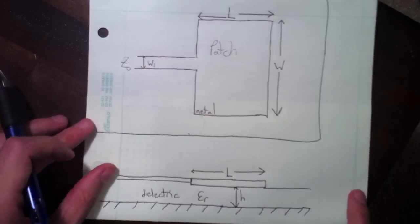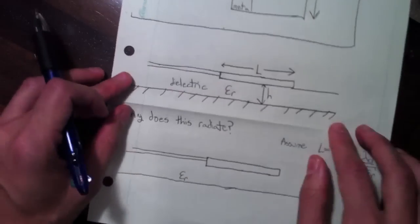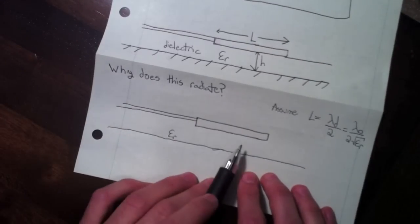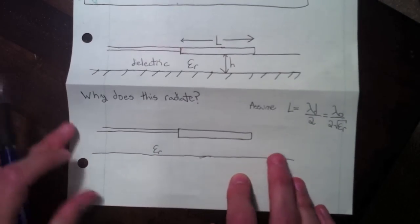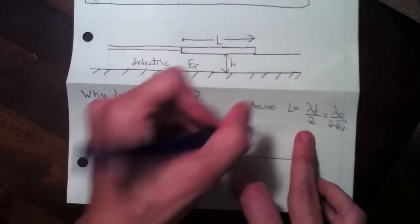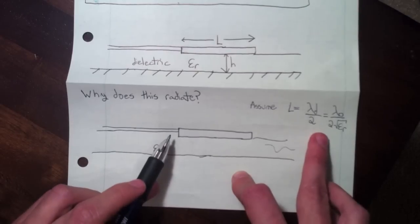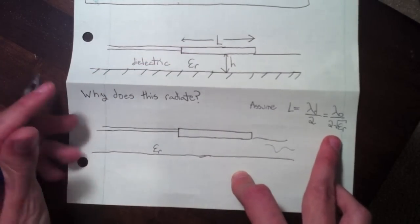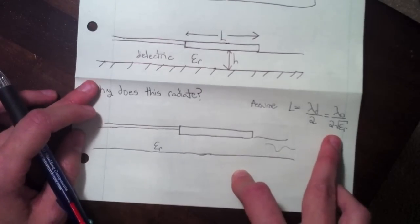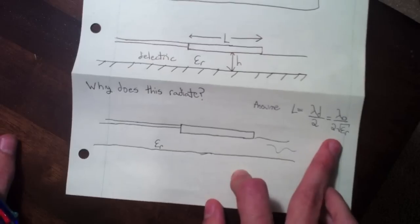So here is a patch antenna and why does it radiate? Looking at the side view, let's assume that the length is given by half a wavelength in this dielectric medium. That's the same as the wavelength in free space except it's divided by the square root of the dielectric constant, which just comes from the propagation speed in a dielectric.